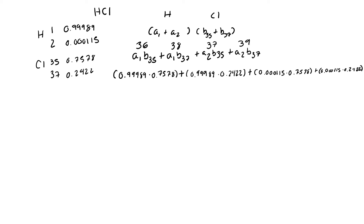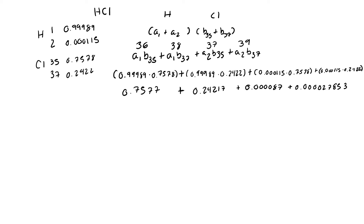We are not going to add all of these terms together — although if you did, they should sum to 1 or 100%. Instead, we solve each as a separate fractional abundance. We also need to remember that the terms will not necessarily be in order by mass. For example, we should not assume that the term with 0.7577 is M and the term with 0.24217 is M+1 — we know from calculating the masses that 0.24217 is actually the M+2 peak.